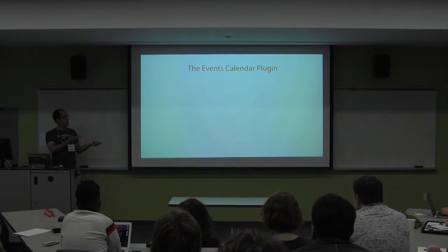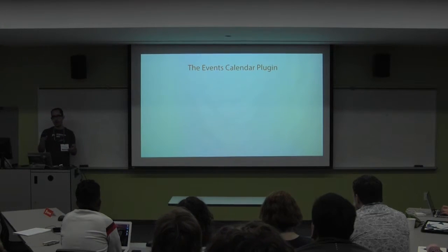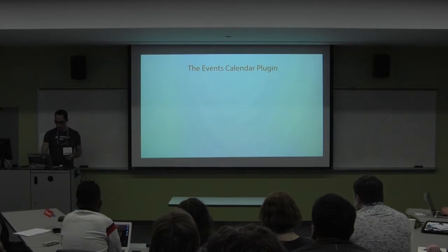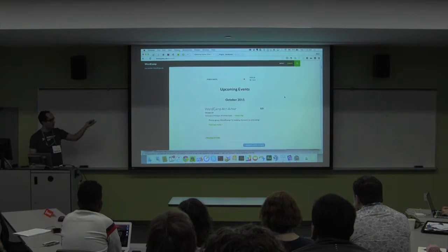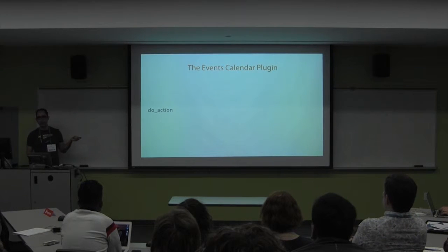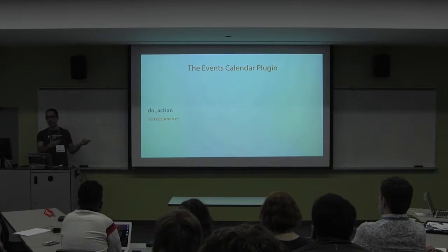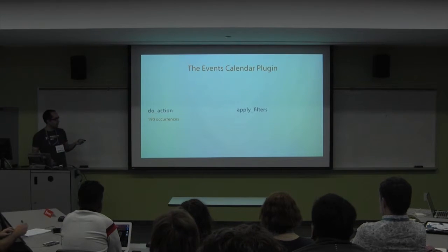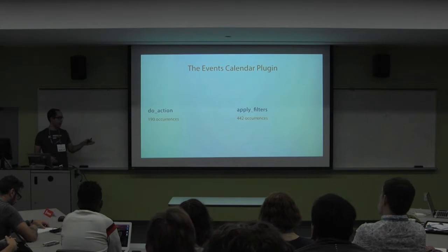Take The Events Calendar plugin as an example. If you search within it for 'do_action', you get 190 actions you can hook into. That's a lot, and they're giving you those hooks if you know how to find them. Same with 'apply_filters' - 442 different filters you can hook into just in this one plugin.